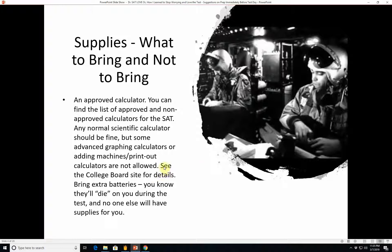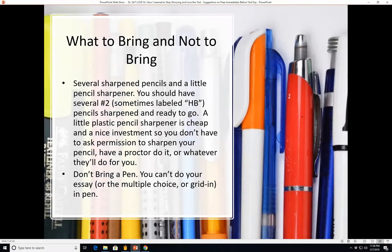All right. So bring extra batteries for your calculator since you already know you're not allowed to plug it into the wall. You know that the calculator will die on you during the test and no one will have any supplies for you. So what to bring and not to bring continued. Bring several sharpened pencils and a little plastic pencil sharpener. You should have several number two, you know, normal pencils that you use. Sometimes those are labeled HB if they're used for drafting, but it's the same thing. And HB is the same as a number two pencil ready to go. A little plastic pencil sharpener is cheap and a nice investment. So you don't have to ask permission to sharpen your pencil, have a proctor do it or whatever they'll do for you. Don't bring a pen. You can't do your essay with it. You can't do the multiple choice. You can't do the grid in. You can't do anything on the SAT with a pen.